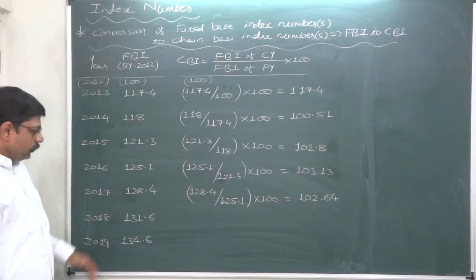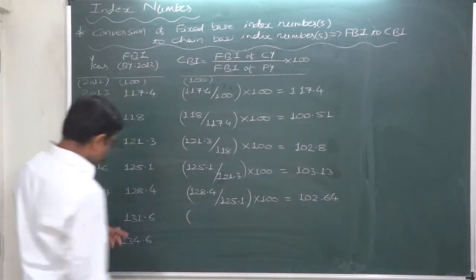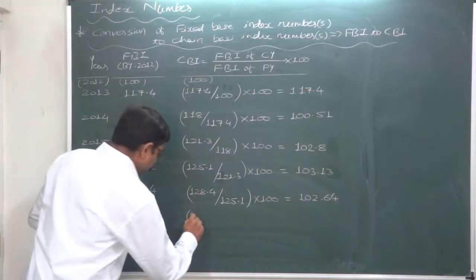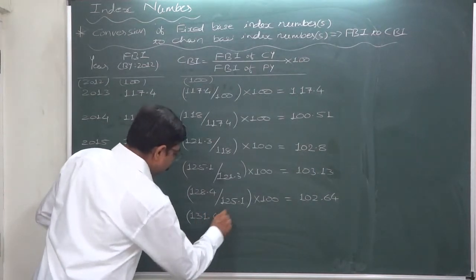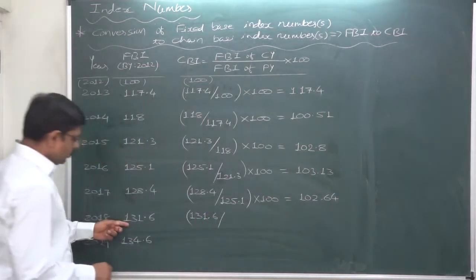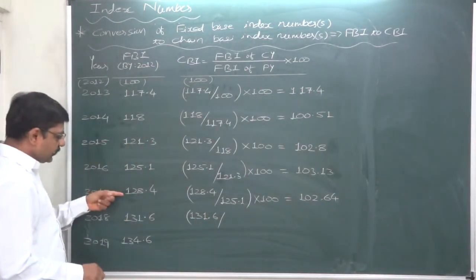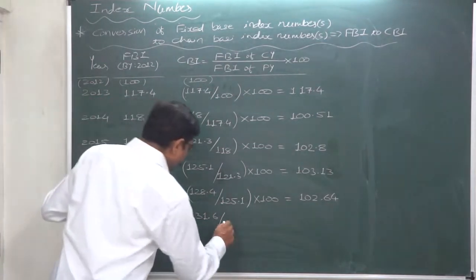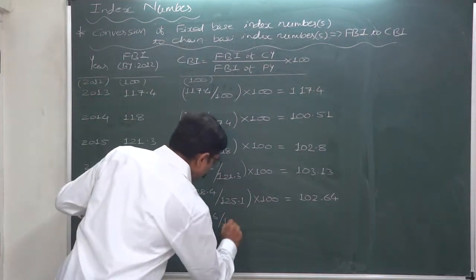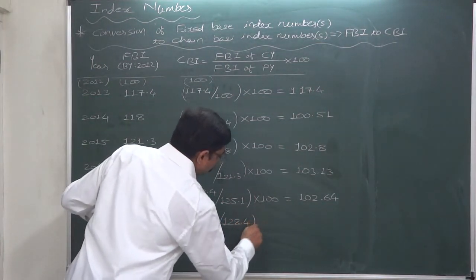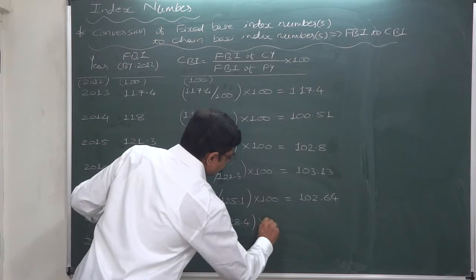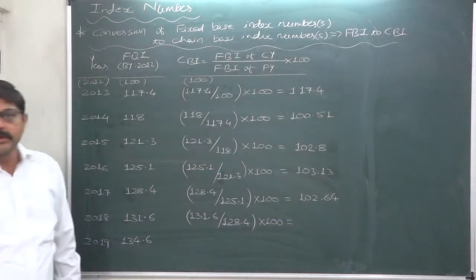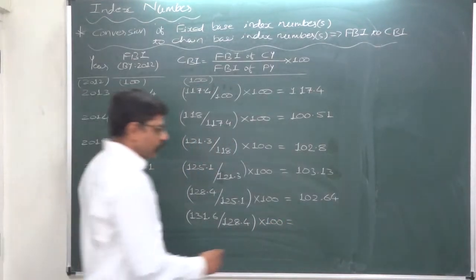For 2018: the fixed-base index number for the current year is 131.6, divided by the fixed-base index number of 2017, which is 128.4. Multiply by 100. The answer is 102.49.